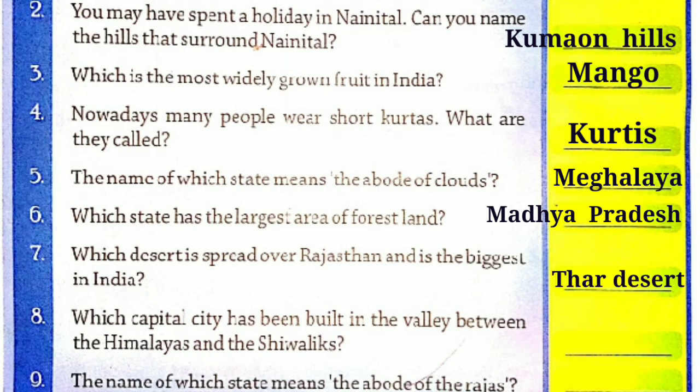Question number eight: Which capital city has been built in the valley between the Himalayas and Shivaliks? ऐसी कौन सी capital city है जो Himalayas और Shivaliks के valleys के बीच में बनाई गई है? तो इसका आंसर होगा — Dehradun. देहरादून वो capital city है जो इन दो — Himalayas और Shivaliks श्रेणियों के बीच में बनाई गई है।